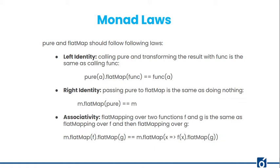The first law is left identity. Left identity says that calling pure and transforming the result with a function is the same as calling the function directly. Basically, if you call pure and then flatMap over it with a function, you can do it directly by just calling the function — they are the same. The second is right identity, which says that if you are passing pure to flatMap, it is the same as doing nothing. If you flatMap over something with the pure method, you are basically just returning the original value.